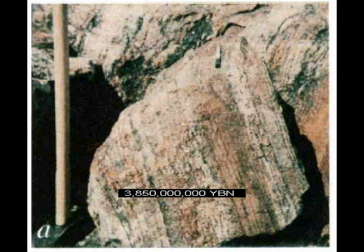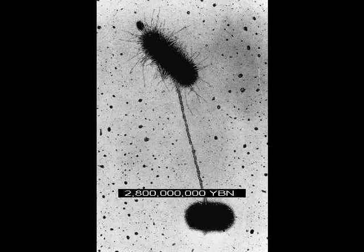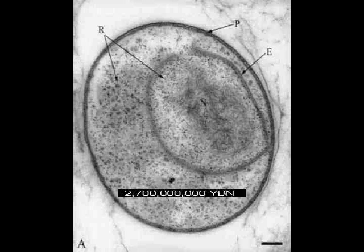Oldest sediment. The banded iron formation begins. Oldest fossil evidence of life: stromatolites. Oldest fossil of an organism. Gender and sex conjugation evolve in bacteria. Cells can eat other cells. Eukaryotic cell — the first cell with a nucleus. The first protist. The nucleus may be a captured bacterium, virus, or plasmid, or grows from the cell membrane.